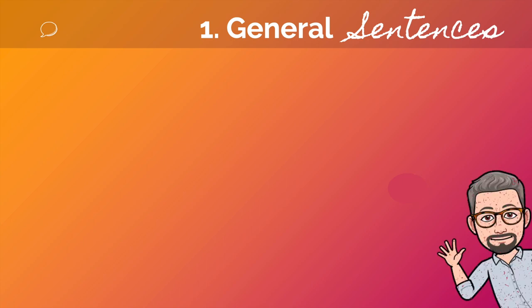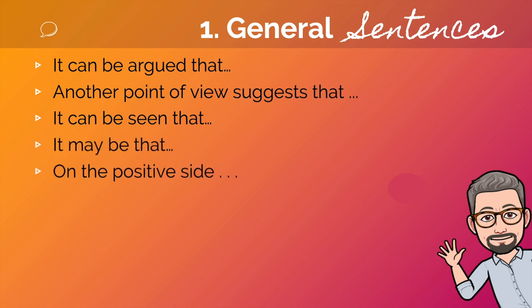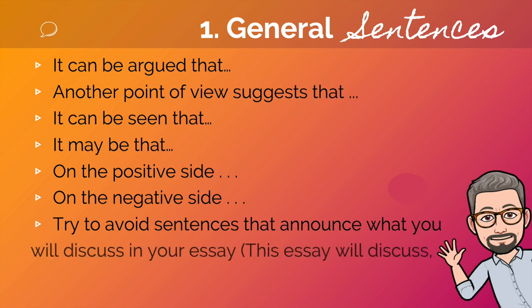First stop: general sentences. We can start a sentence with 'it can be argued that' — this is the most common one. Another point of view suggests that. It can be seen that. It may be that. On the positive side. On the negative side. Also, try to avoid sentences that announce what you will discuss in your essay, such as 'this essay will discuss' or 'this essay will be focused on.'